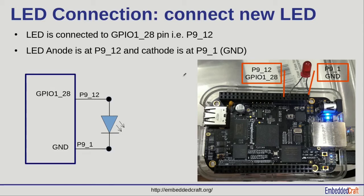For this video tutorial, I will connect one LED to pin P9_12. P9_12 is actually GPIO bank 1, pin number 28. P9_1 is ground. In this way we can directly connect the LED.